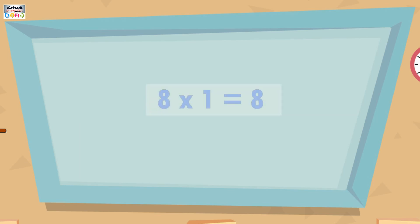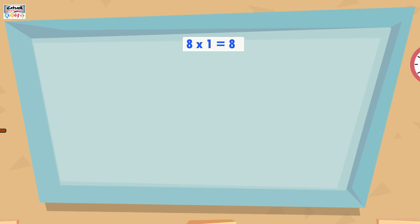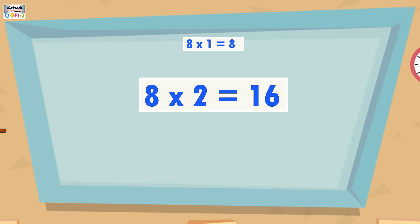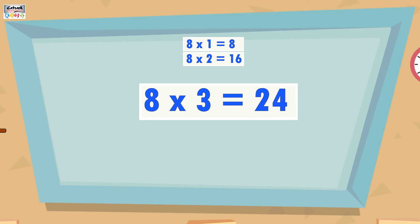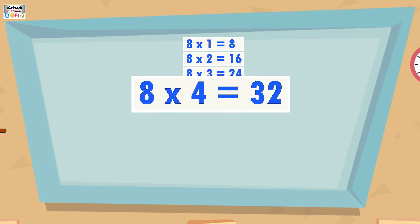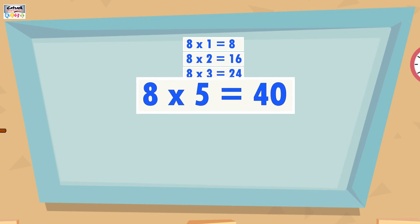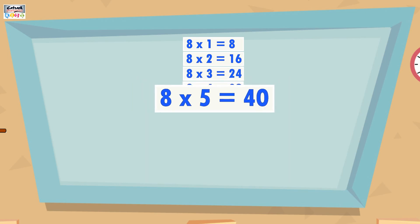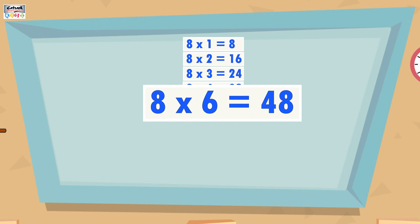8 ones are 8, 8 twos are 16, 8 threes are 24, 8 fours are 32, 8 fives are 40, 8 sixes are 48.